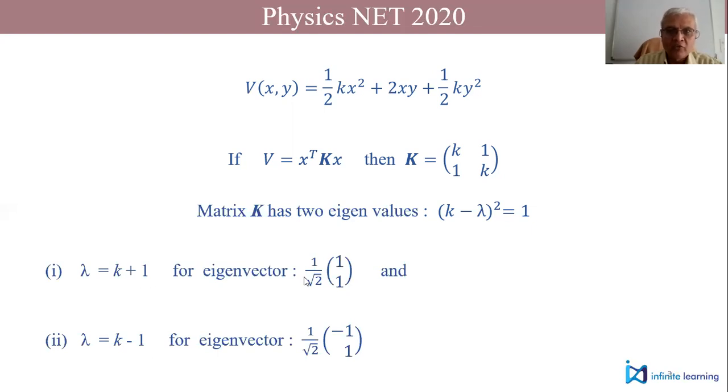For k+1, you will have eigenvector [1, 1] and for k-1, your eigenvector will be [-1, 1]. Of course, 1/√2 comes from the normalization of these eigenvectors.